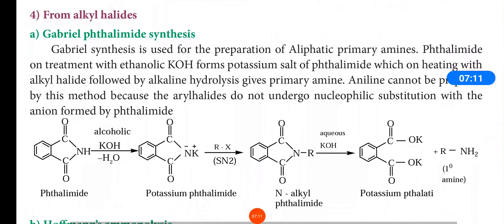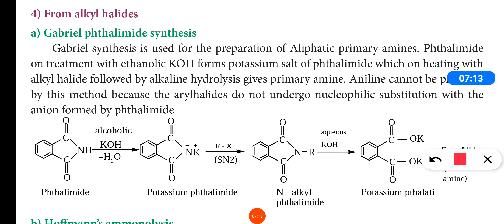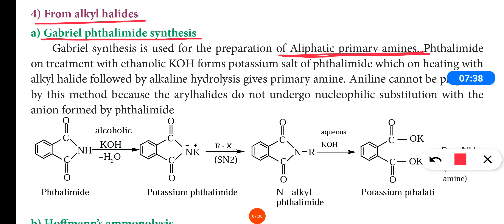The next method is the preparation of amines from alkyl halides. This method's name is Gabriel phthalimide synthesis, which is used for the preparation of aliphatic primary amines. In Gabriel synthesis, amines are prepared from alkyl halides, starting from phthalimide.